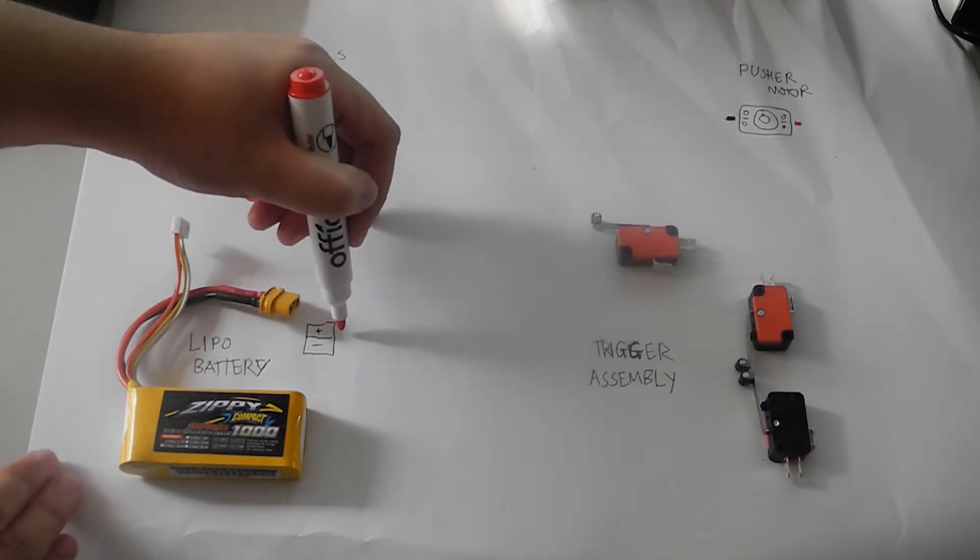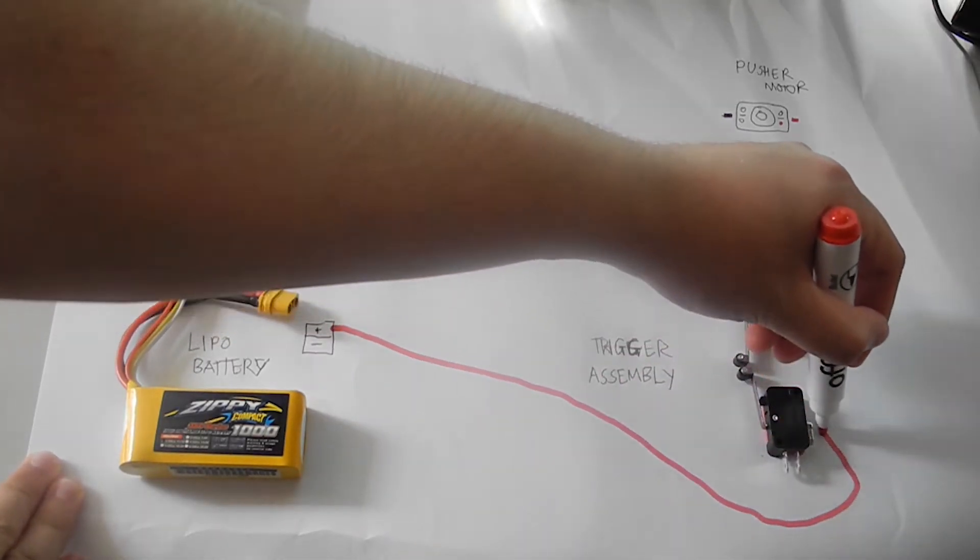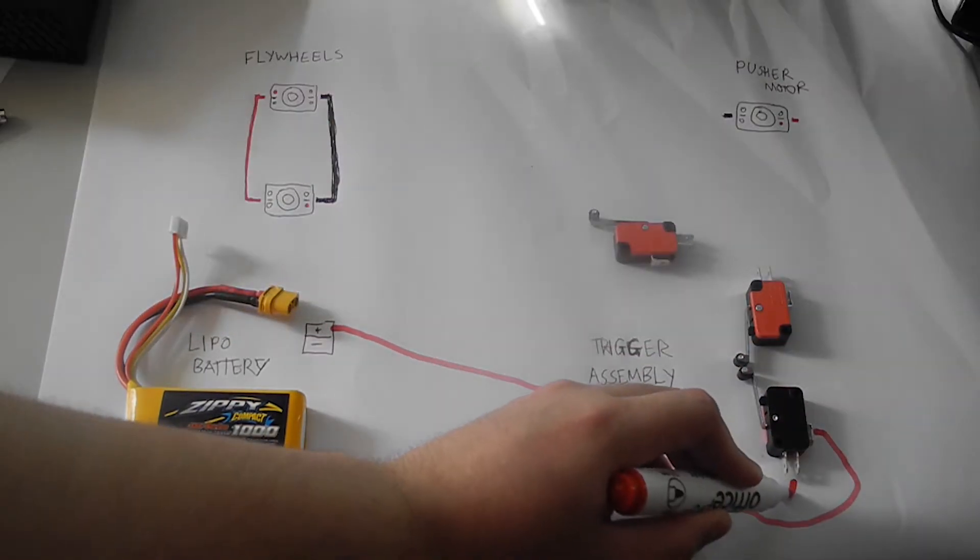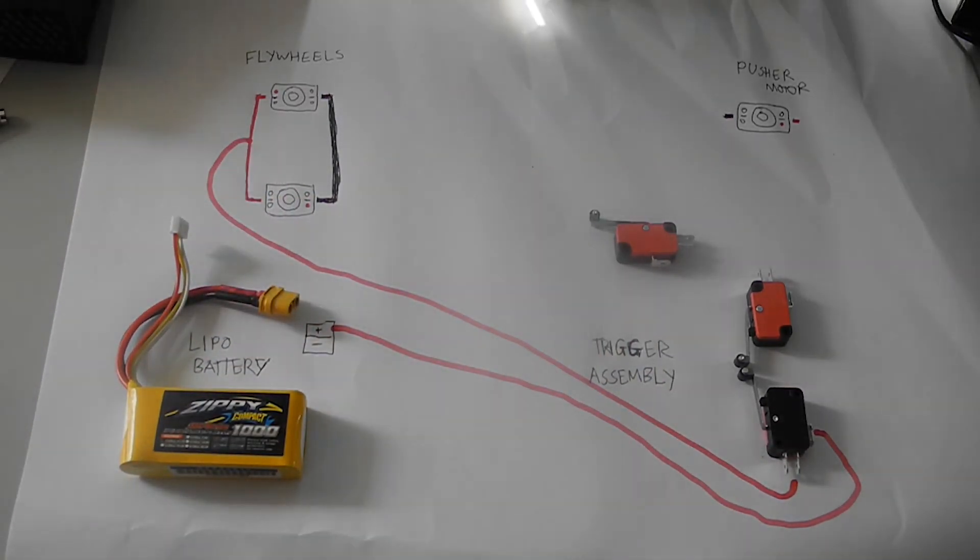First, a wire will go from the positive on the XT60 to the common on the rev trigger switch, then the normally open will go to the positive on the flywheels. This switches the flywheels on and off.